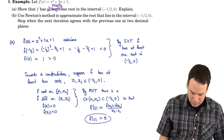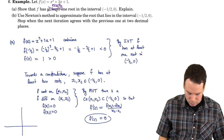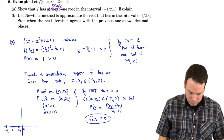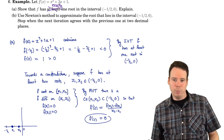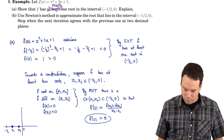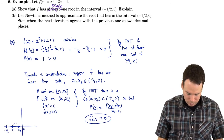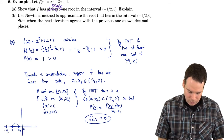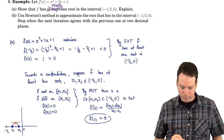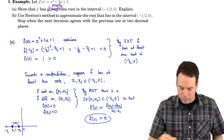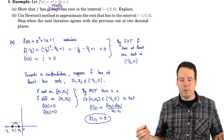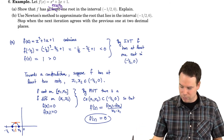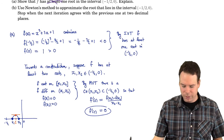All of this was just to say: suppose I have two roots on the interval negative one-half to zero, called x1 and x2. The function has to pass through those two points, so there has to be a place in between them where the derivative is zero. By the mean value theorem, there has to be a place where the derivative is zero — that's what we called c.